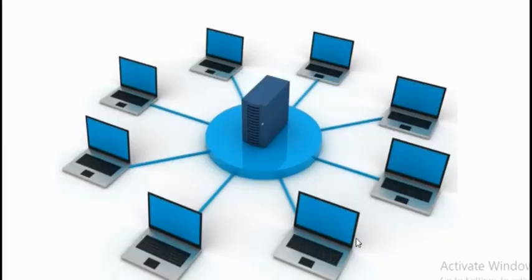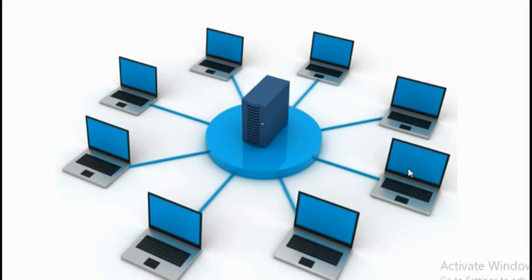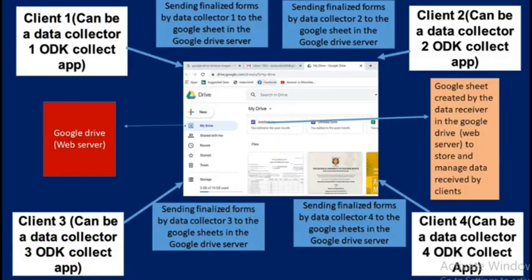To understand the meaning of a server, I will use this example. As you can see, this is a network with client computers and a server or central system. We have a series of client computers: client computer one, client computer two, client computer three — all connected to a server or central system. From this central system, the clients can access files. A server is not only a computer system; it can also be a program or software.